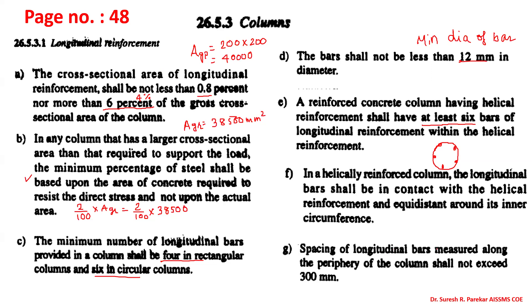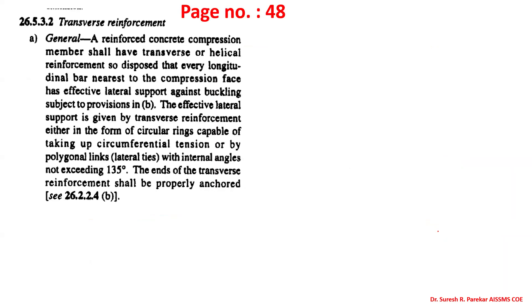The spacing of longitudinal bars measured along the periphery of the column — that is the distance between two longitudinal bars — shall not exceed 300 mm.